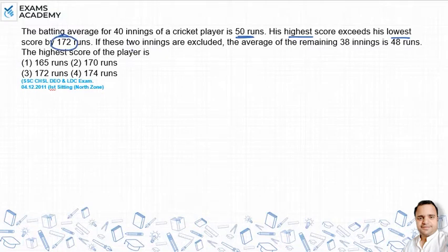The question is further, if these two scores are taken out, then the average of 38 innings is 48. We are asking for the highest score, which is the highest score of the player.